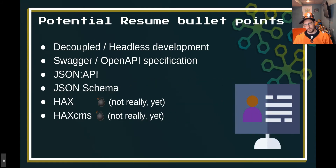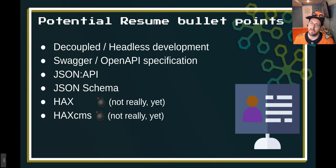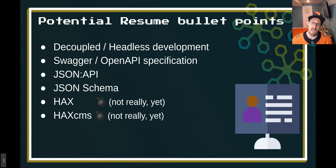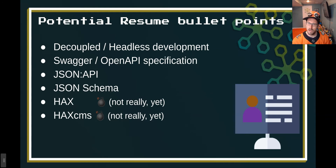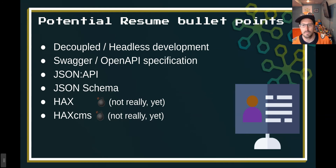So potential resume bullet points: decoupled and headless development — absolutely. I'm going to be at least mentioning what Swagger and the OpenAPI specification are — very cool abstract concepts that do some very powerful things at scale. I'll be looking at JSON API and JSON schema briefly, and then make sure you can write down why you understand what HAX is. I have seen people put it on a resume before, so it never hurts.